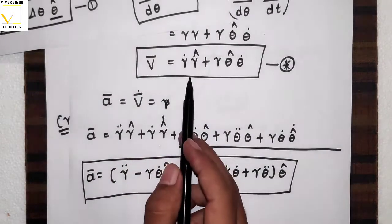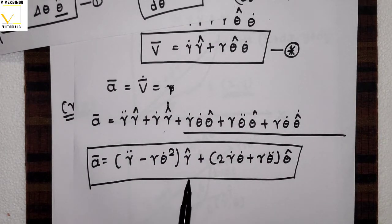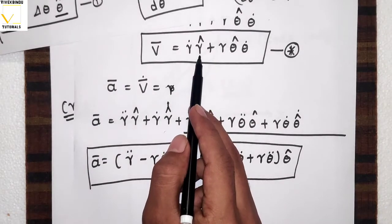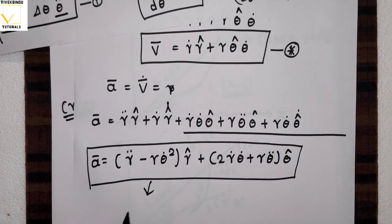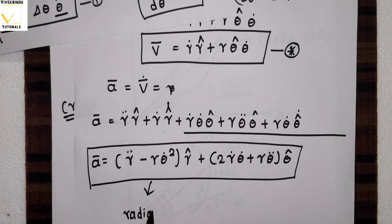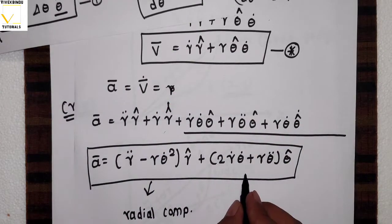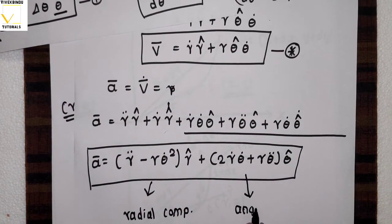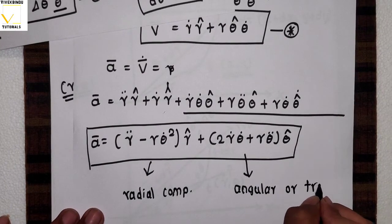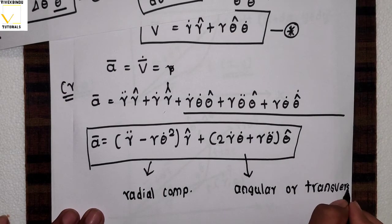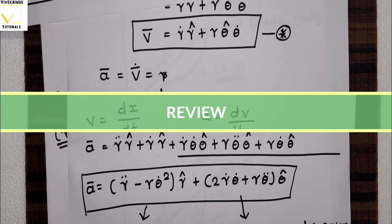So we have calculated the velocity equation and acceleration equation in plane polar coordinate system. The r cap term is the radial component and theta cap term is the angular or transverse component. The radial component of velocity is r dot, and the radial component of acceleration is r double dot minus r theta dot squared. The transverse component of acceleration is 2 r dot theta dot plus r theta double dot.